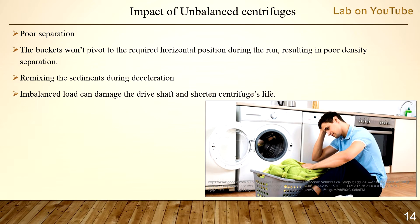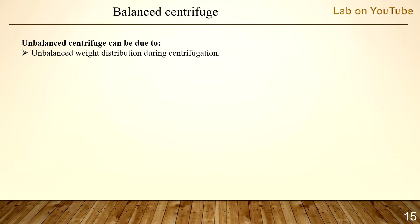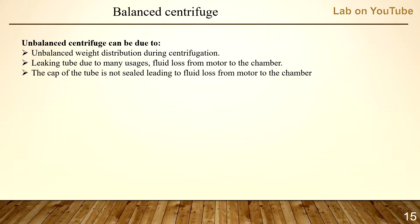By the way, the same principle applies to your washing machine — if it stands on an uneven floor, it will damage the drive shaft and become noisy and shaky during spinning. An unbalanced centrifuge can be due to uneven weight distribution, leaking tubes from many uses, fluid loss from the motor to the chamber, or a cap that is not sealed.